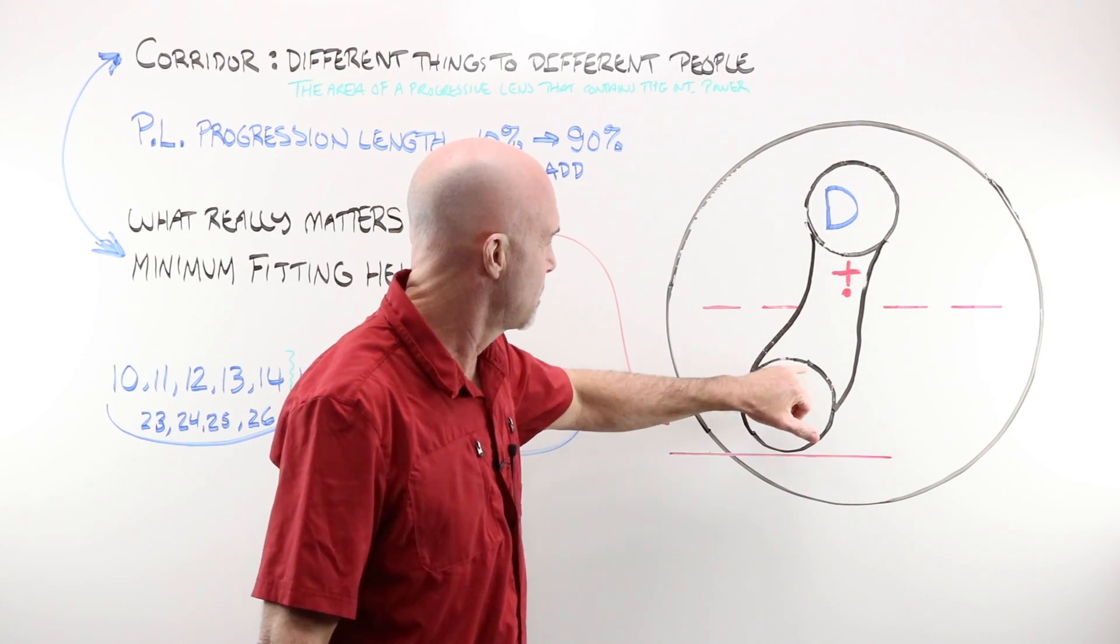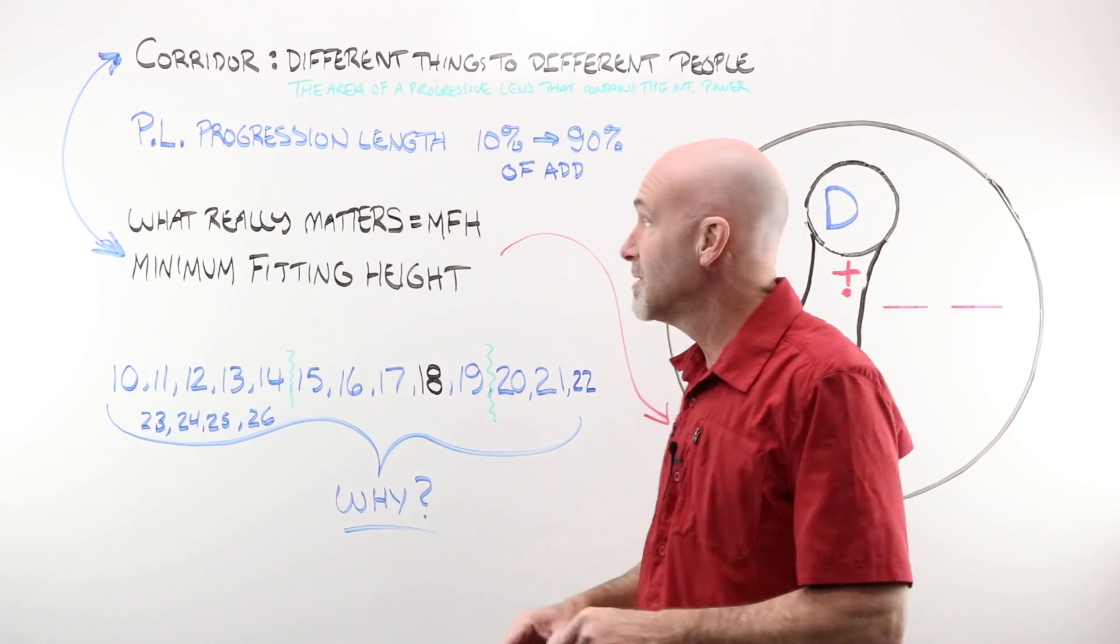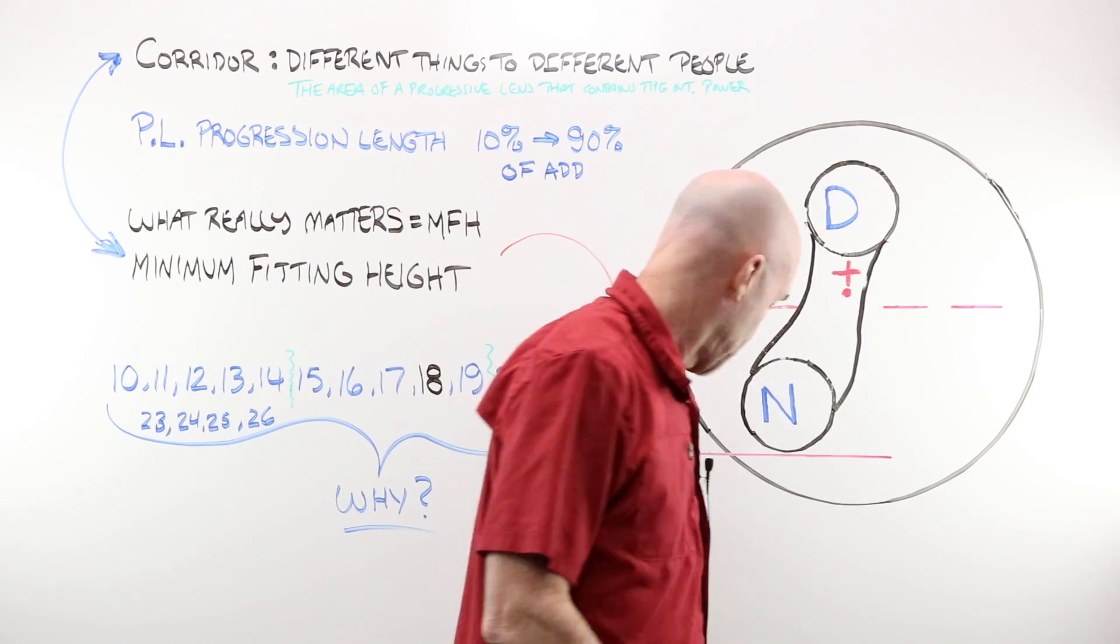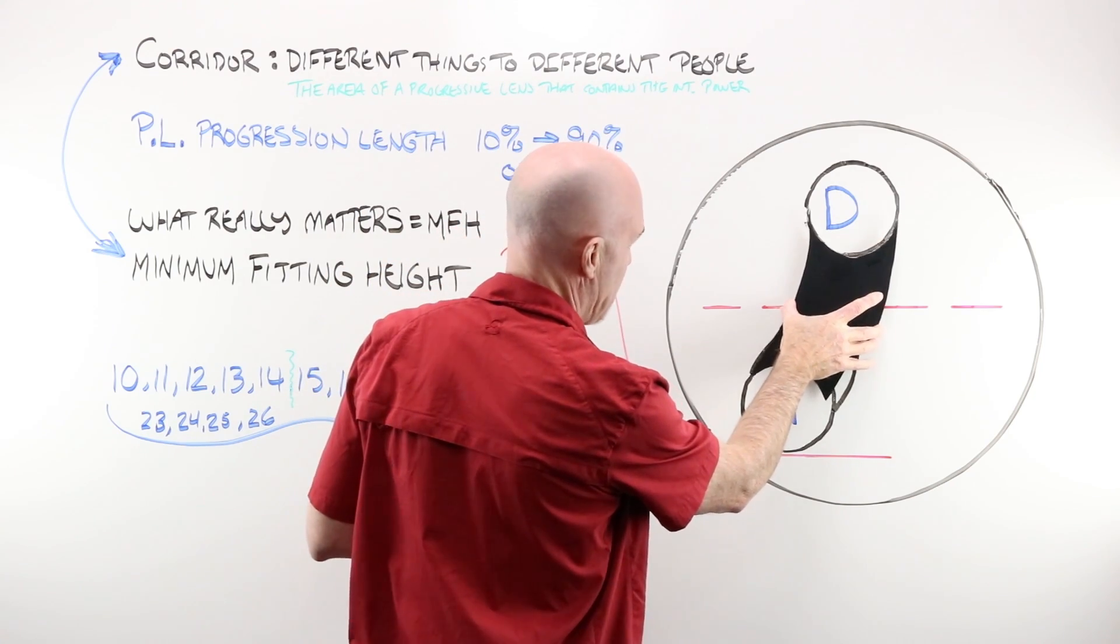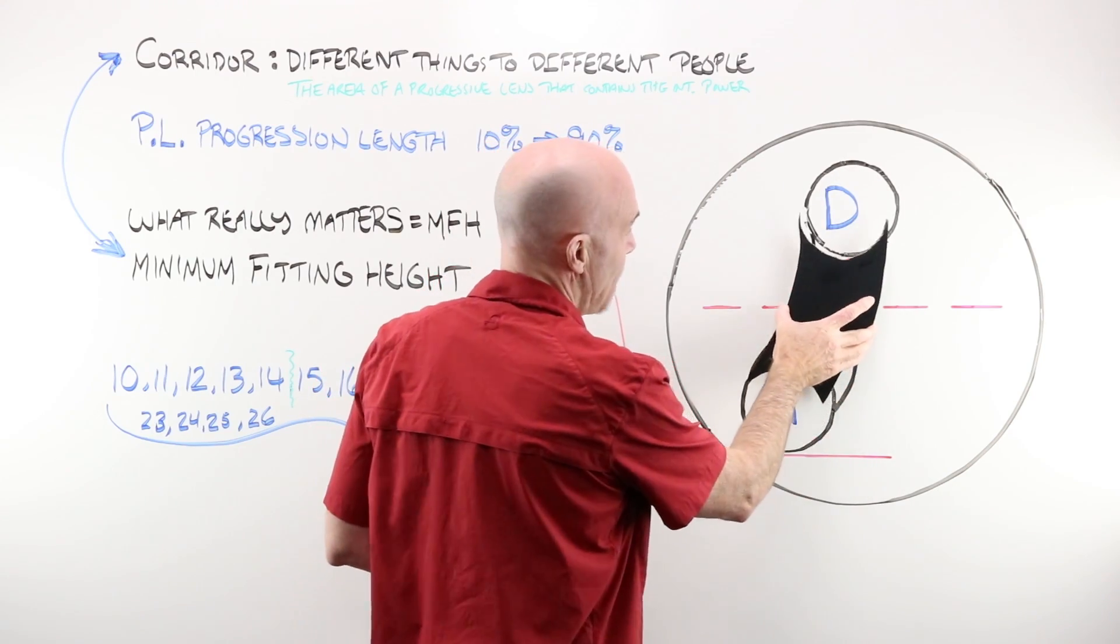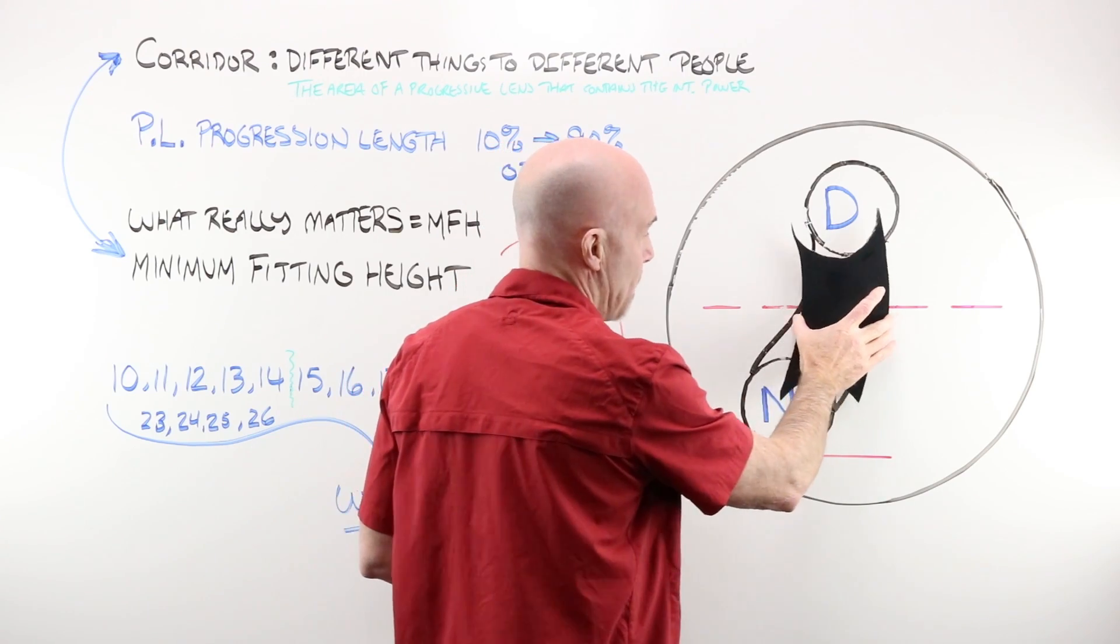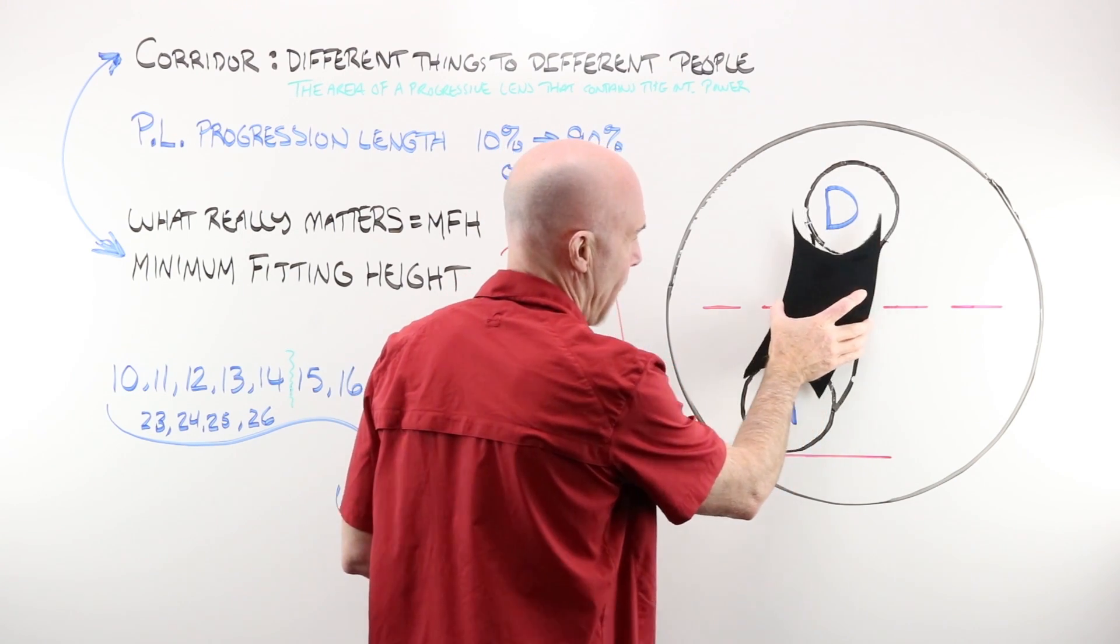It means different things to different people. I think we can agree that it's the area of a progressive lens that contains the intermediate power. I would have thought of it probably from the bottom of the distance circle to the top of the near. Some folks may think from center to center. If you actually go to the people that design lenses, they don't actually use the term corridor at all. They like the term progression length. Where in the lens do you pick up 10% of the add to where in the lens do you pick up 90%?